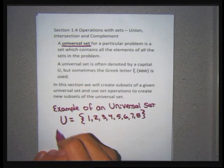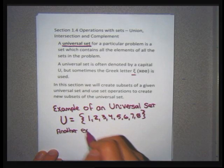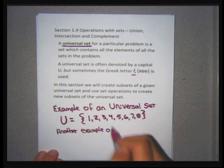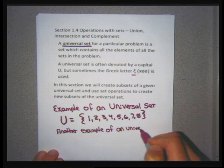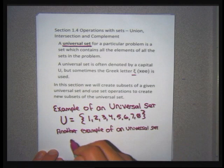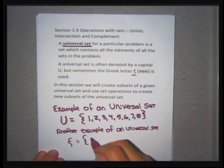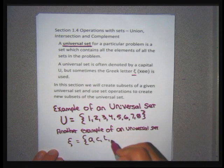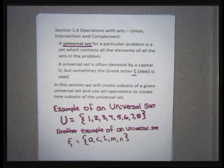Sometimes we use a Greek letter — I'm not sure I can draw it. A universal set is going to be given the name U or that Greek letter. It can contain anything — it could be a finite set or an infinite set. But for one specific group of problems, the universal set is the only elements we'll consider. When we get deeper into this section, you'll get a better understanding of why we need a universal set.